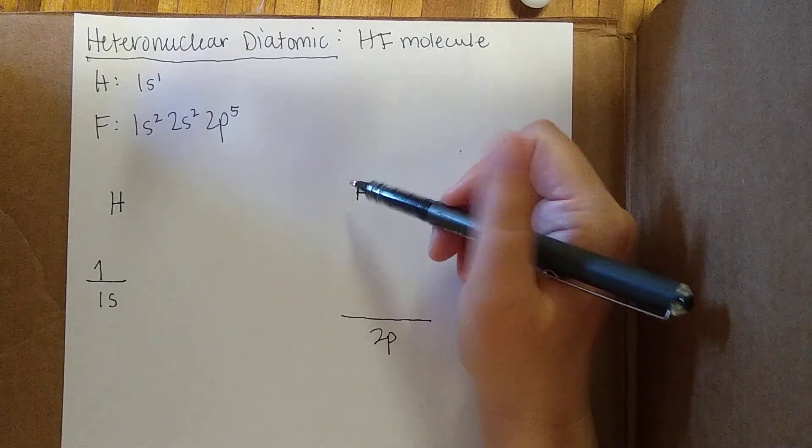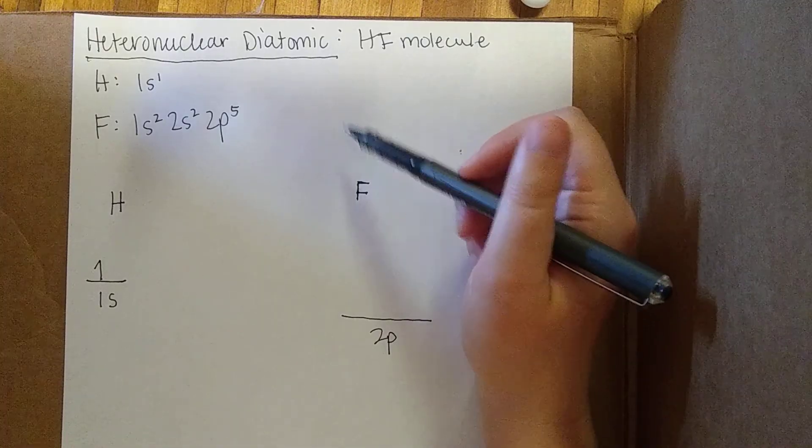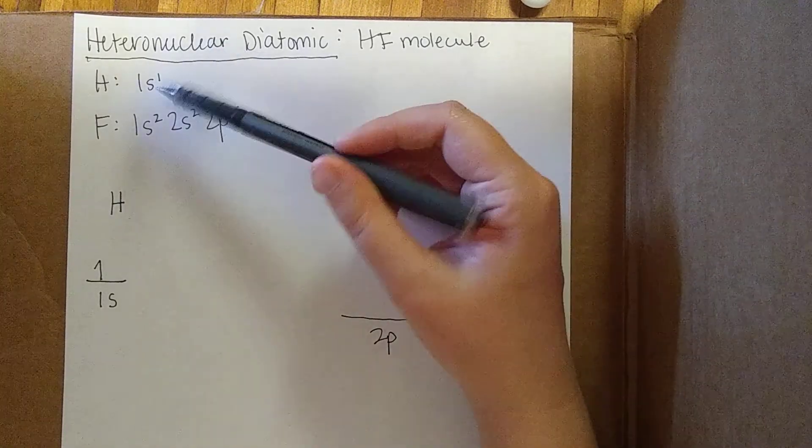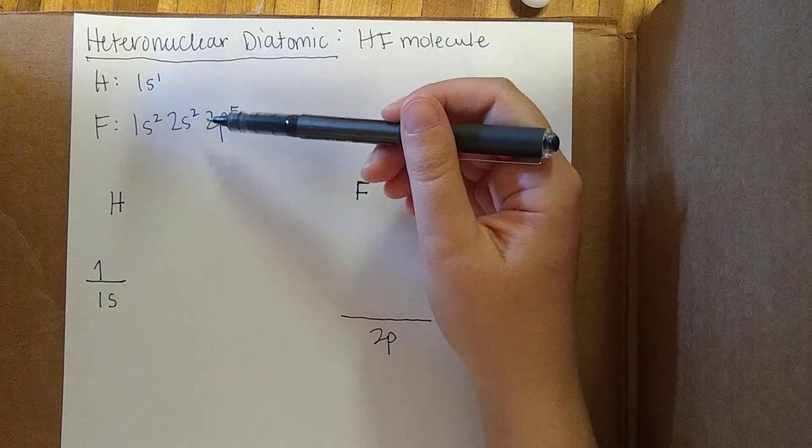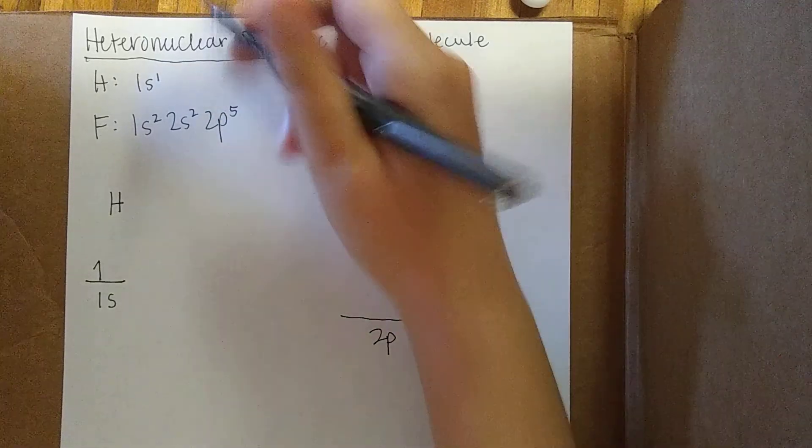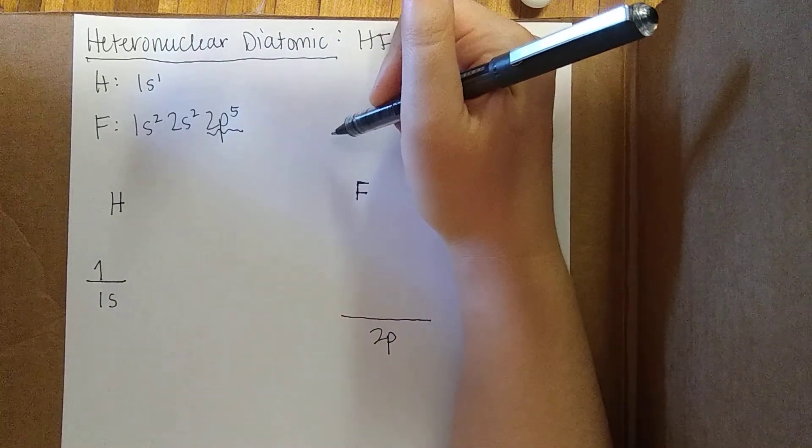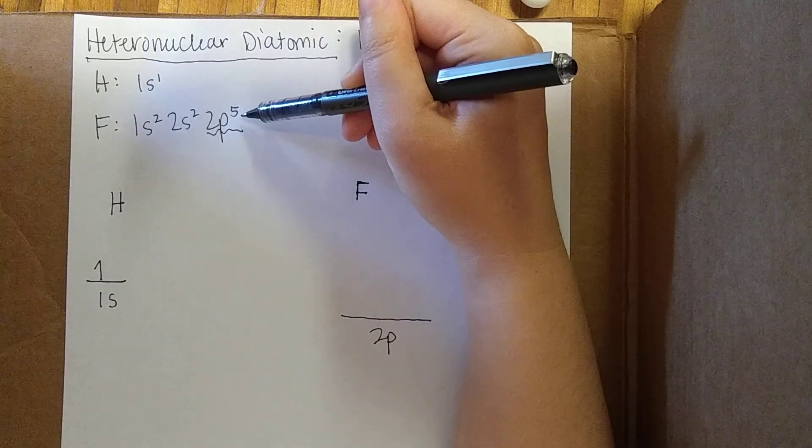The reason I'm considering the 2p is because the bonding is going to take place between the valence electrons. For hydrogen, we just have this one electron we need to consider. For fluorine, we have the valence electrons in this outer 2p level. This is where the bonding is going to take place.